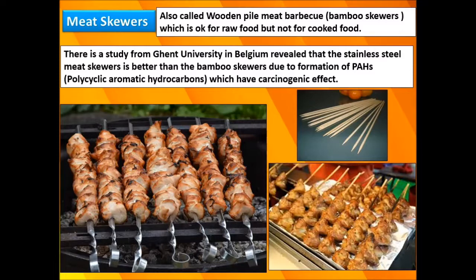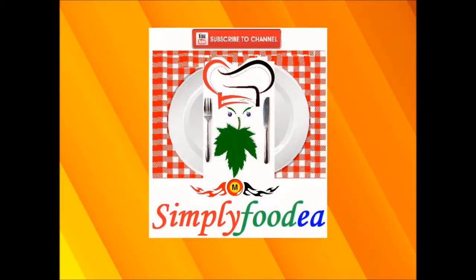The study revealed that stainless steel meat skewers are better than bamboo skewers due to the formation of a chemical called PAHs, which stands for polycyclic aromatic hydrocarbons, which have a carcinogenic effect. We must take care to use stainless steel meat skewers and clean them very well before use. Thank you very much for watching.